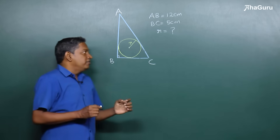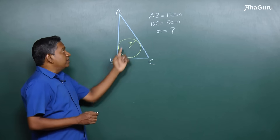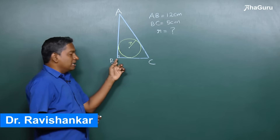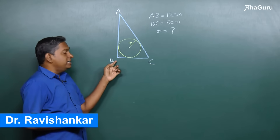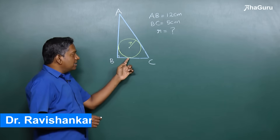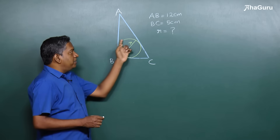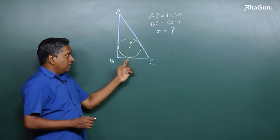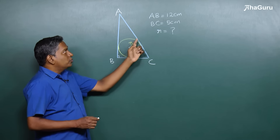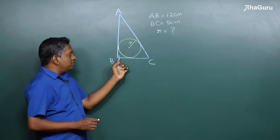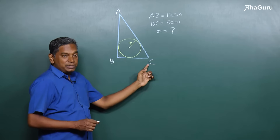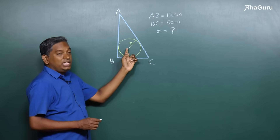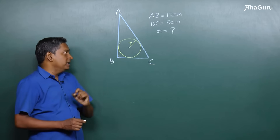In this problem we are given a right angle triangle ABC where angle B is 90 degrees and there is a circle inscribed inside the triangle. We are told that AB is 12 centimeters, BC is 5 centimeters, and we are asked what is the value of the radius of the circle.